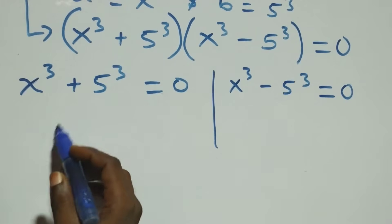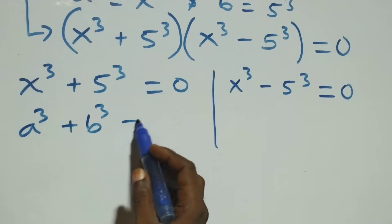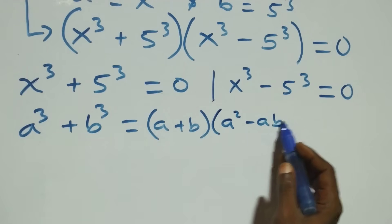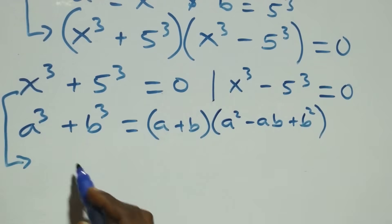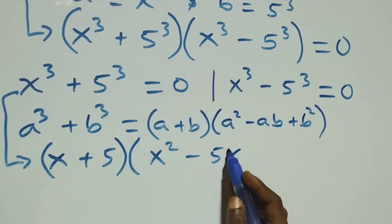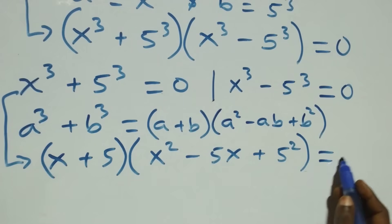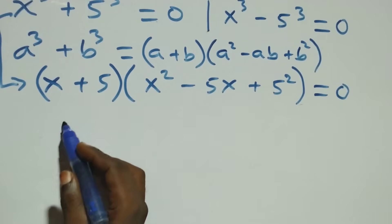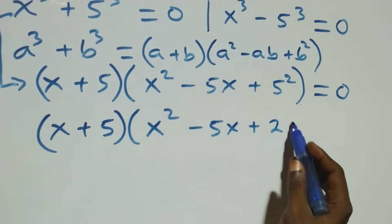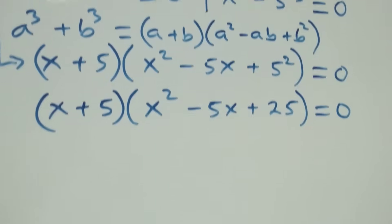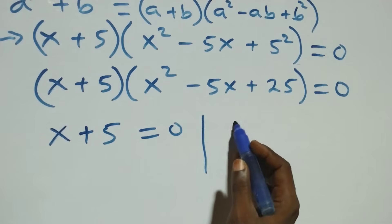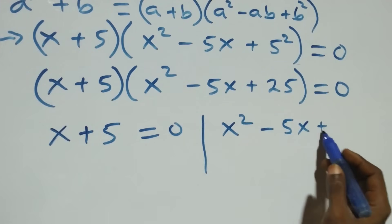Solving the first case: this follows the sum of cubes formula, a³ plus b³ equals (a plus b)(a² minus ab plus b²). This becomes (x + 5)(x² minus 5x plus 5²) equals to 0, which is the same as (x + 5)(x² minus 5x plus 25) equals to 0. From here we have two possible cases: x plus 5 equals to 0, or x squared minus 5x plus 25 equals to 0.